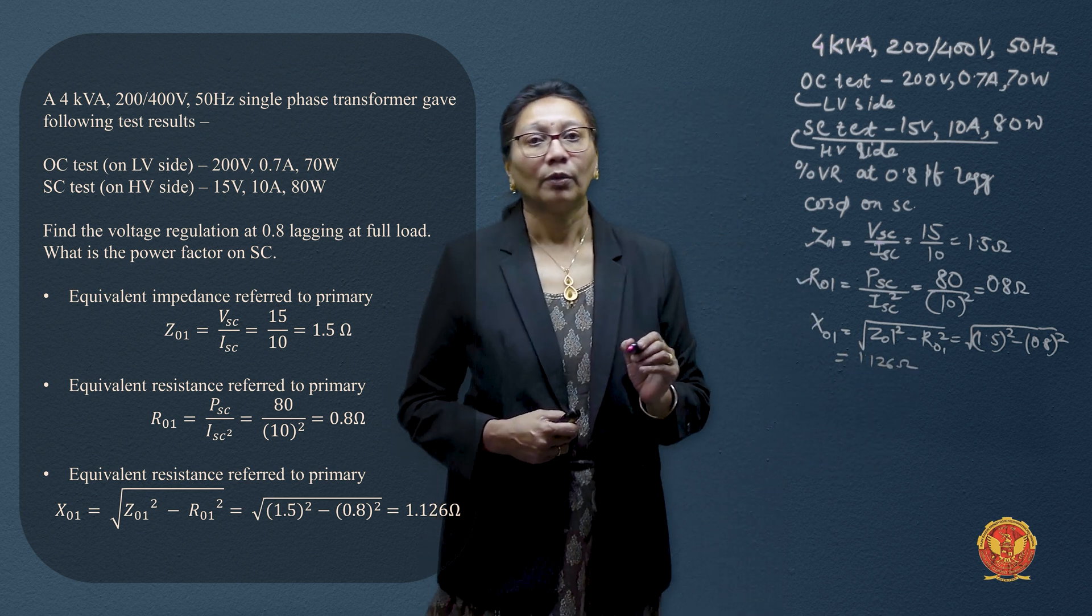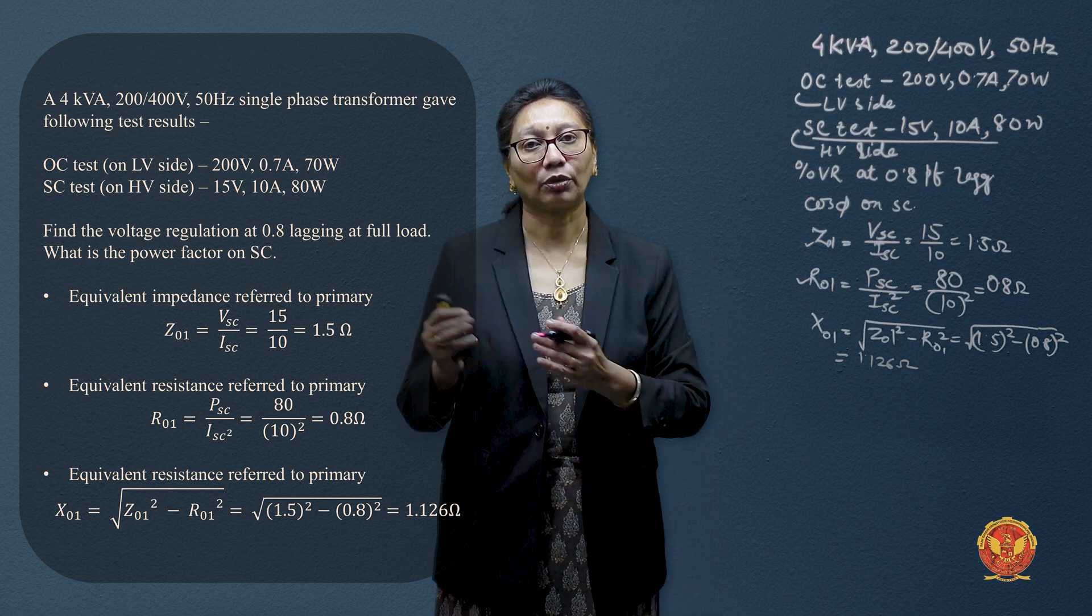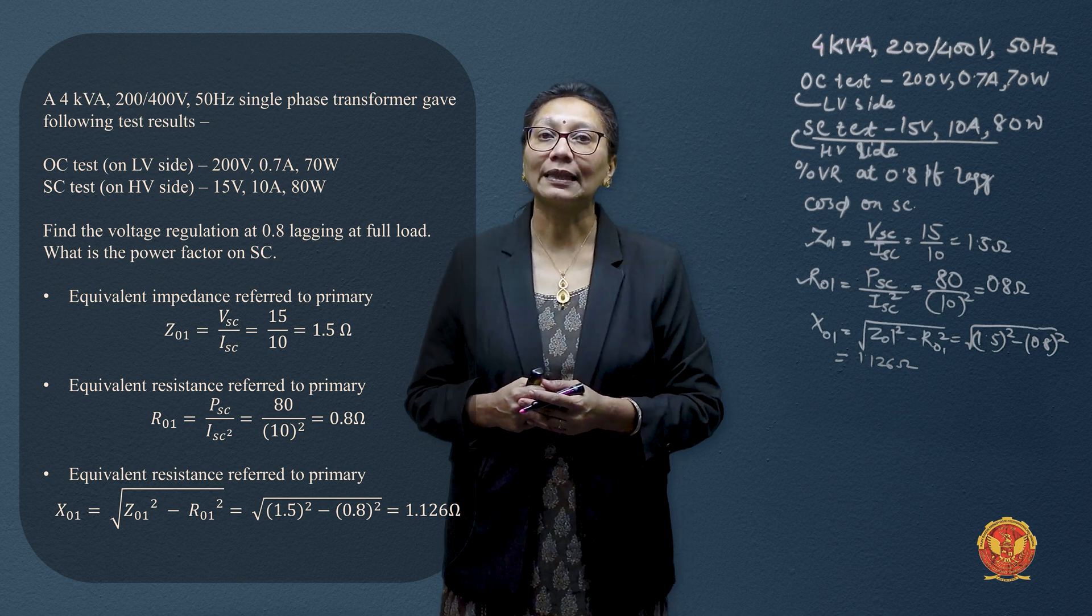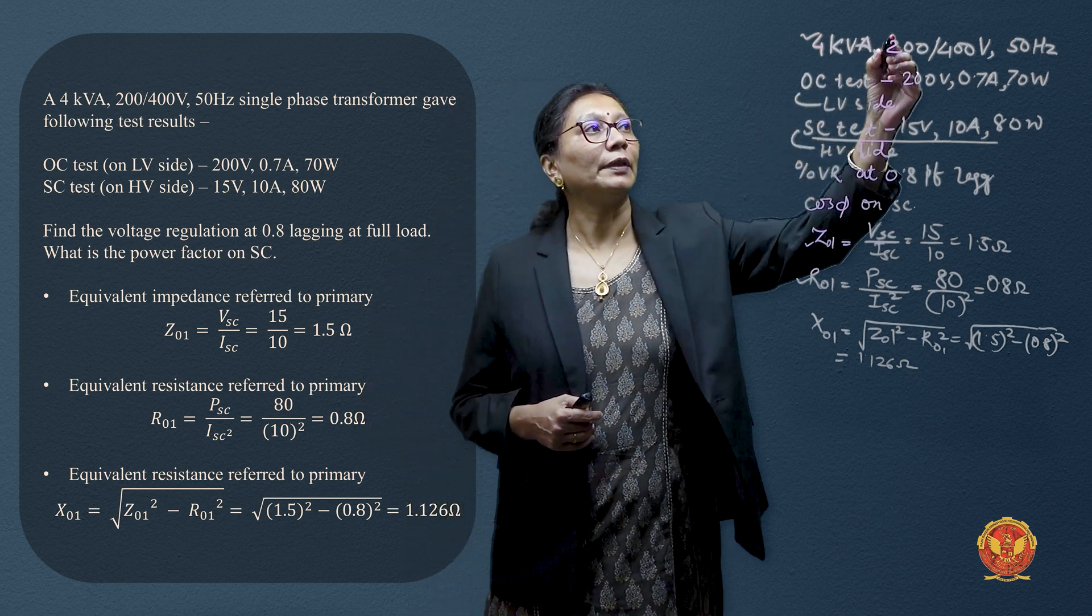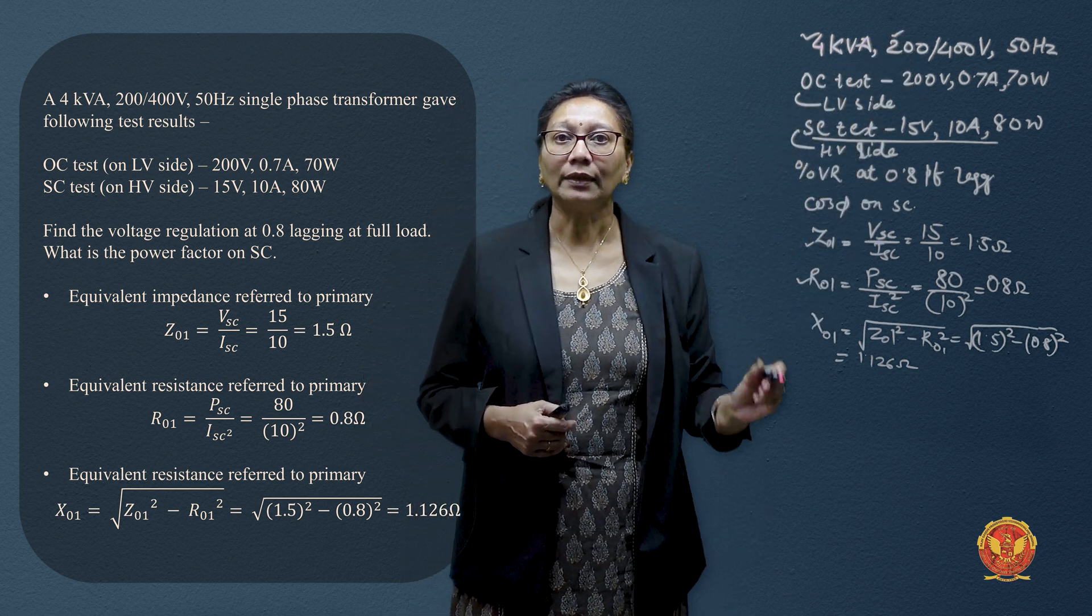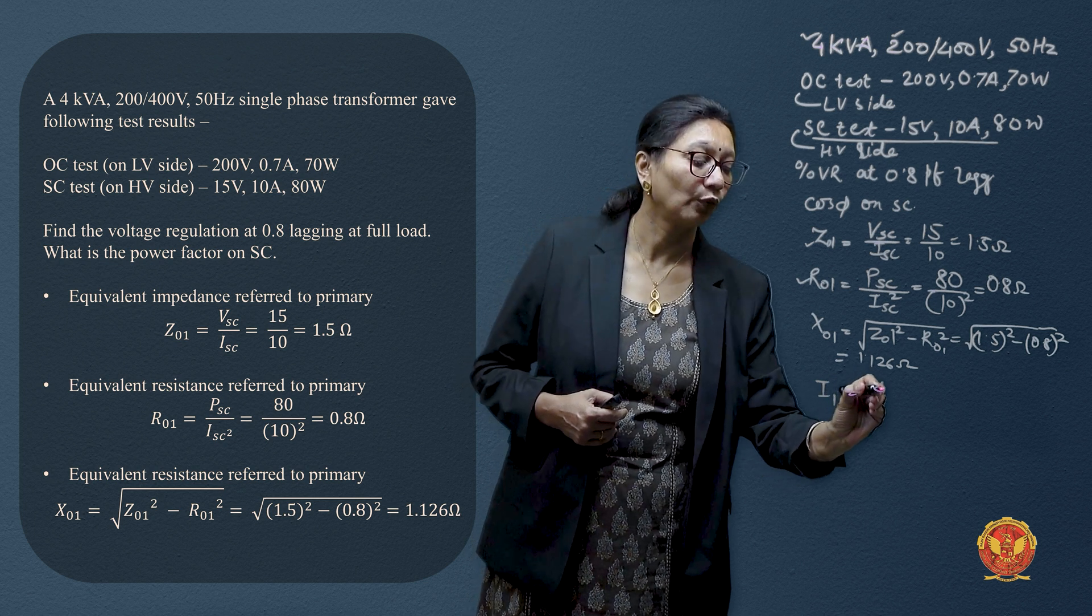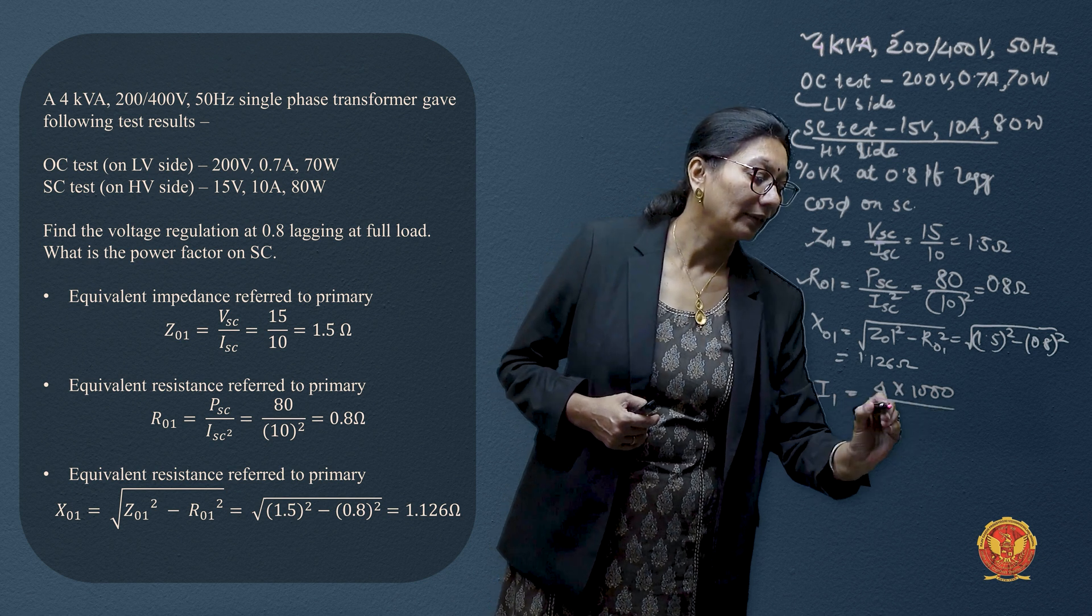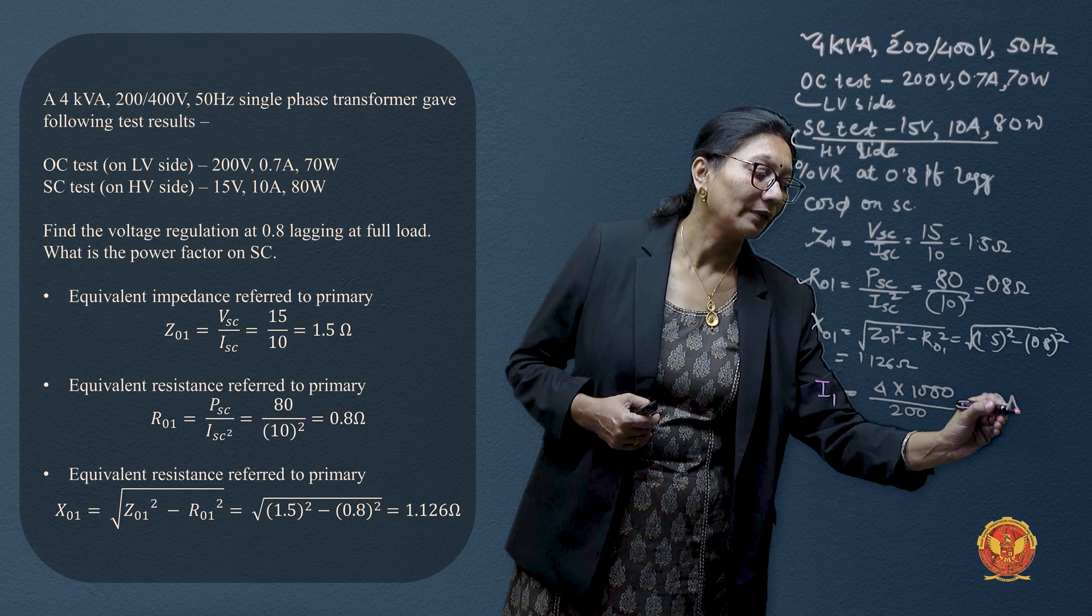Now we need to know primary current also when we talk of regulation of transformer. So primary current how to calculate? We have kVA rating and we have primary voltage. So primary current would be I_1 is equal to 4 into 1000 divided by 200. This gives us current is 20 amperes.